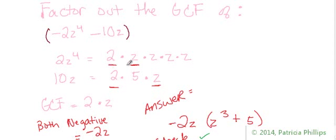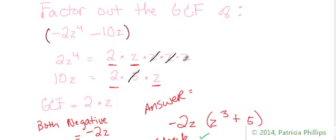2z to the power of 4 is 2 times z times z times z times z. And 10z equals 2 times 5 times z. They both have a 2 — those are common. And they both have at least one z, so we give them one z in common. Is there anything else? No. So the greatest common factor equals 2 times z, which is 2z.